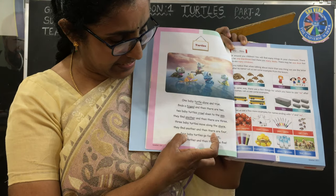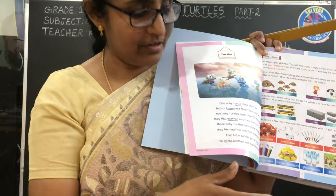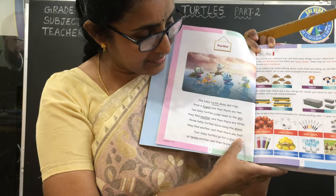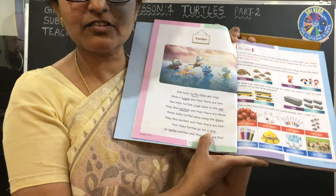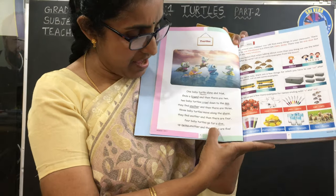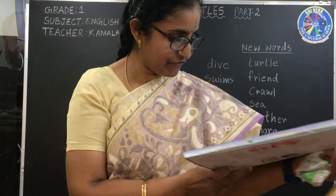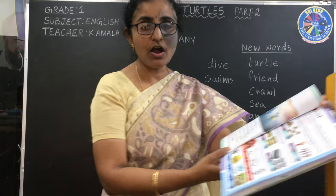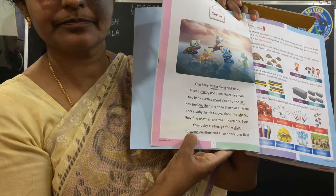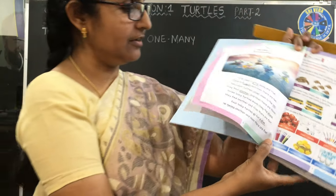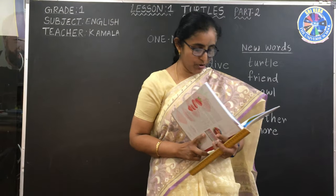Now the next line: 'Four baby turtles go for a dive.' Underline 'dive.' Now the last line: 'Up swims another, then there are five.' Underline 'swims' in the last line. Very good. So this is the poem.